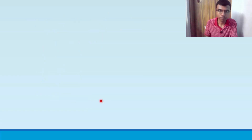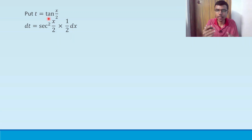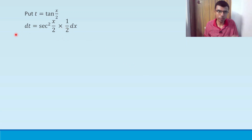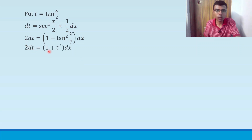This is a textbook method. Put t = tan(x/2). Differentiate: dt will be sec²(x/2) times (1/2) dx by the chain rule. Sending the 2 across, 2 dt = sec²(x/2) dx. Now, sec²(x/2) can be written as 1 + tan²(x/2) using the identity sec²θ = 1 + tan²θ. Since tan(x/2) = t, we have tan²(x/2) = t², so 2 dt = (1 + t²) dx.